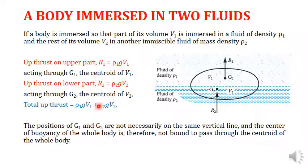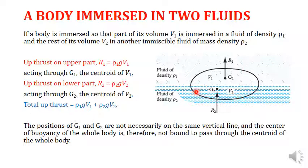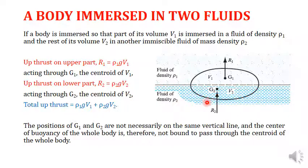Now consider a body immersed in two fluids. In the figure, there is a margin line separating two immiscible fluids in one container: the upper fluid has density rho1 and the bottom fluid has density rho2. An object is immersed across both fluids, with a certain surface area in contact with rho1 and another surface area in rho2. The buoyancy force and center of buoyancy may differ depending on the densities.